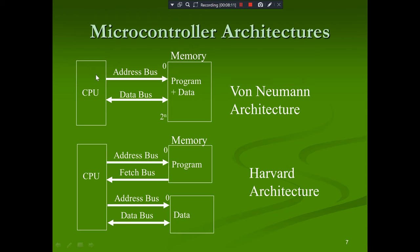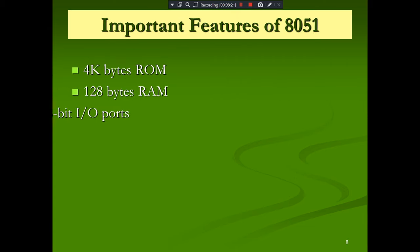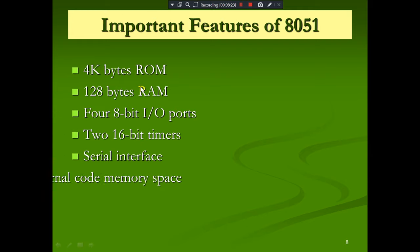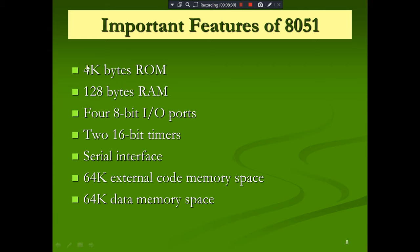This architecture difference is very important — they may ask you in a viva to differentiate Von Neumann and Harvard architecture. The important features of 8051 to remember: it has 4 kilobytes of ROM, 128 bytes of RAM, four 8-bit I/O ports (totaling 32 I/O lines), two 16-bit timers, a serial interface, 64KB external code memory space, and 64KB data memory space.